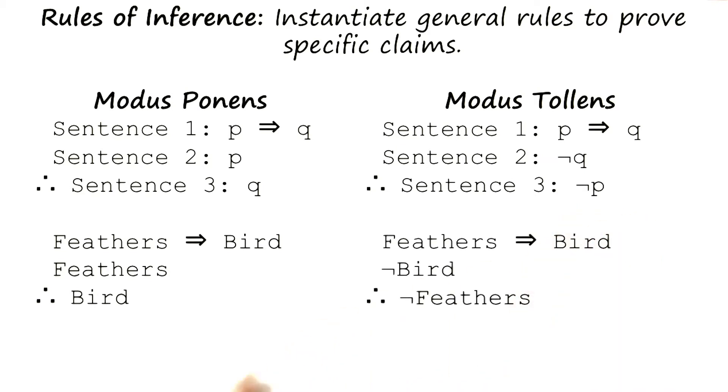Let us take an example of modus tollens. Imagine that there is a robot that has been programmed, bootstrapped with the knowledge feathers imply bird. That's part of its knowledge base already. This robot goes to a new country and is talking to the people in that country, and the people tell the robot a story about an animal that is not a bird.